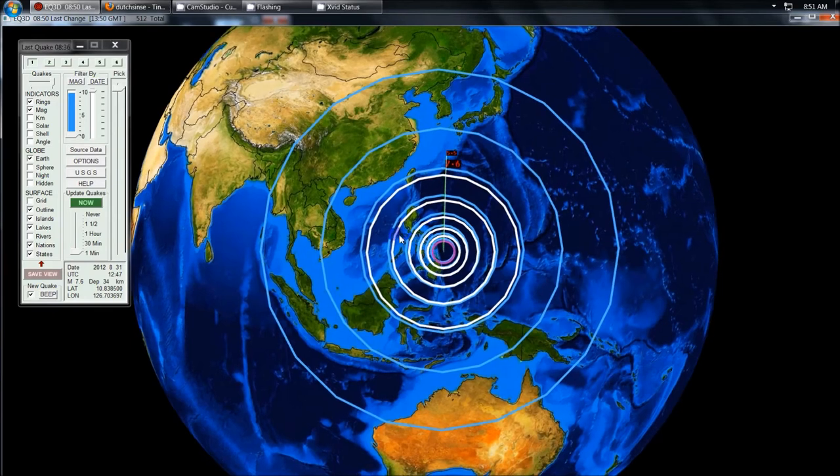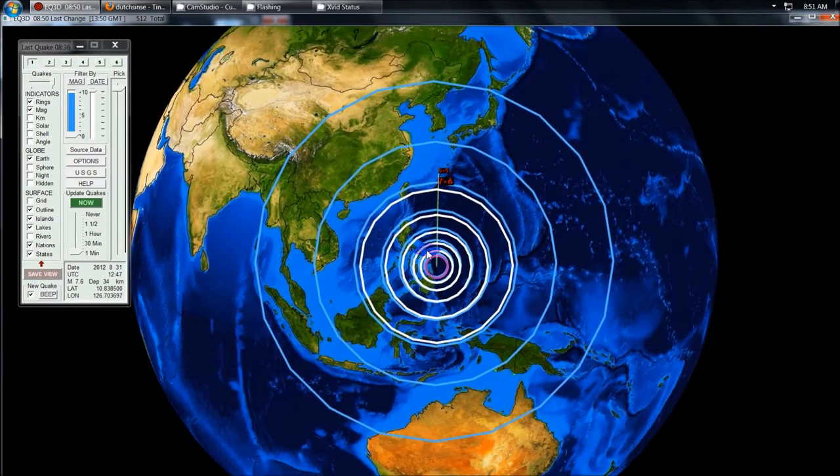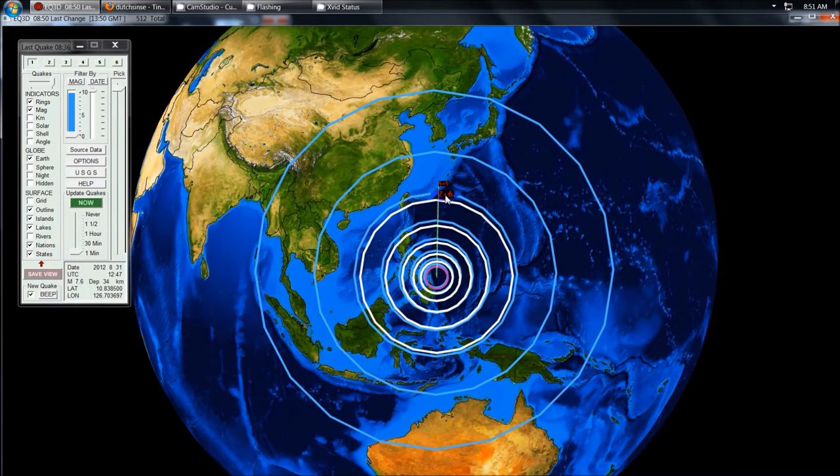We're looking at Earthquake 3D here, which is a USGS feed of the most recent earthquakes. You can see it, 7.6 magnitude struck in the Philippines right here. Down here to the south you have New Guinea, up here to the north you have Japan just to give you bearings, China being to the west.